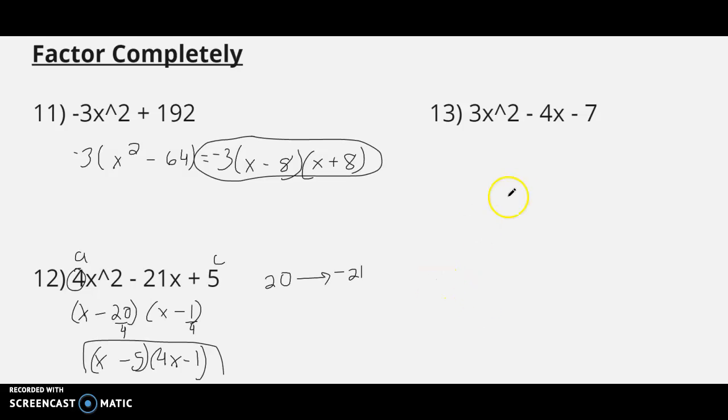Looking at number 13, there's our a, there's our c. A times c is negative 21. Looking for factors of negative 21, add up to negative 4. The two numbers that work are x minus 7, x plus 3. Keep in mind, negative 7 times 3 is negative 21. Negative 7 plus 3 is negative 4. So that combo works. Because a is not 1, we go back to that 3. We divide each of the numbers by 3. And if it divides, great, wonderful. That's what we want. But if it doesn't divide, put that a number in front of the x. 3x minus 7 and x plus 1.